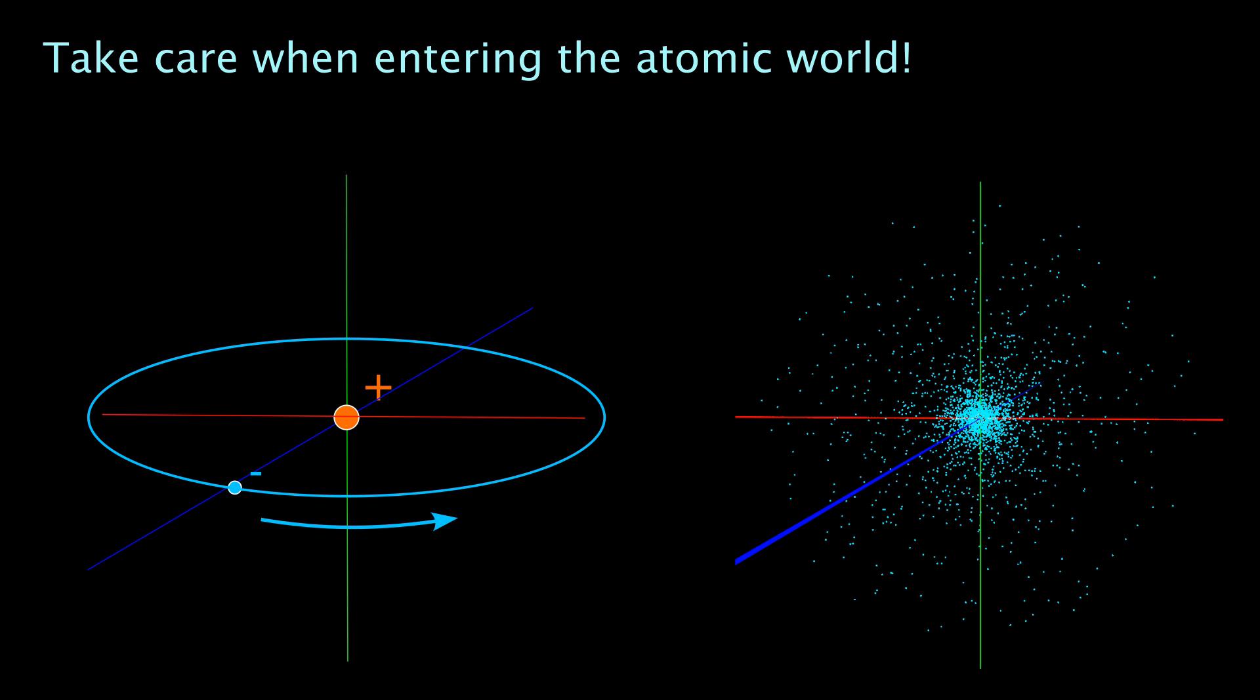The main difference between our own world and the atomic world is wave-particle duality. In our own world, we have a clear difference between particles on the one hand and waves on the other hand. They are two very different things. In the world of atoms, that's not the case.